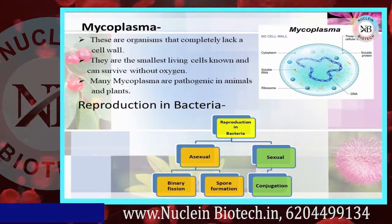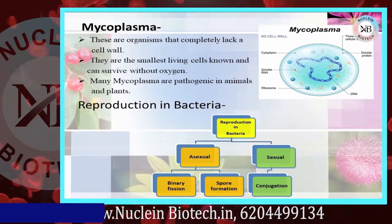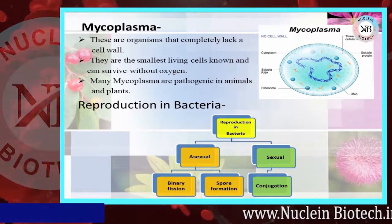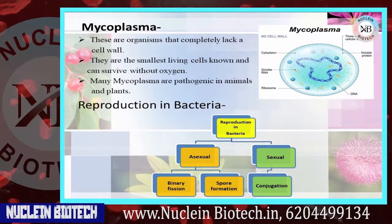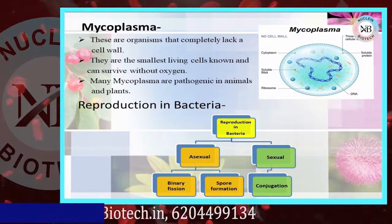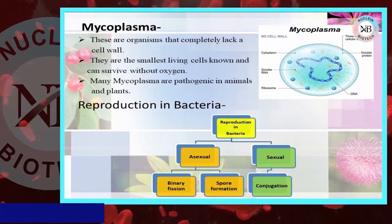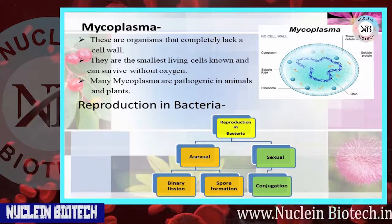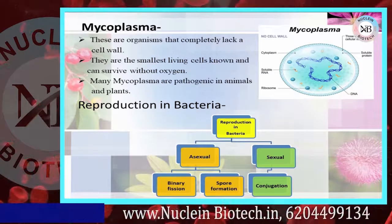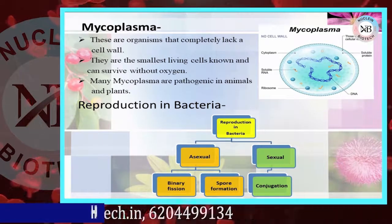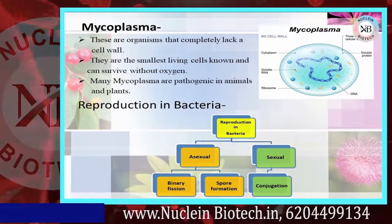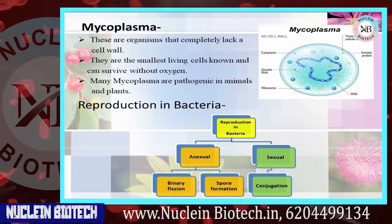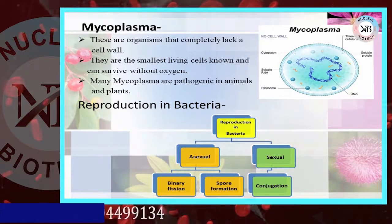Reproduction in bacteria falls into two categories: asexual and sexual. Asexual reproduction is further divided into binary fission and spore formation. Sexual reproduction occurs by conjugation.